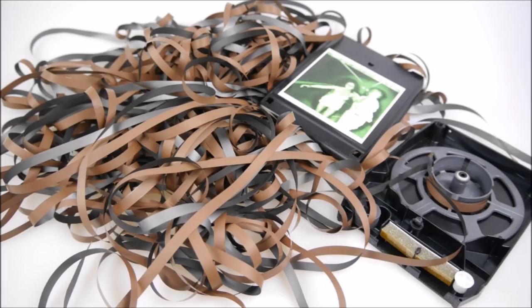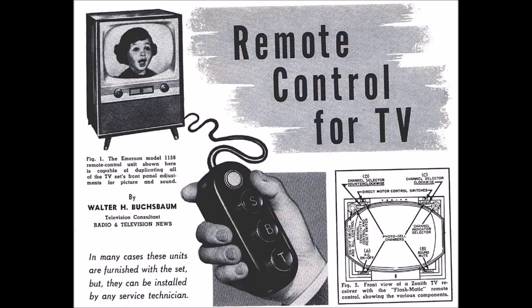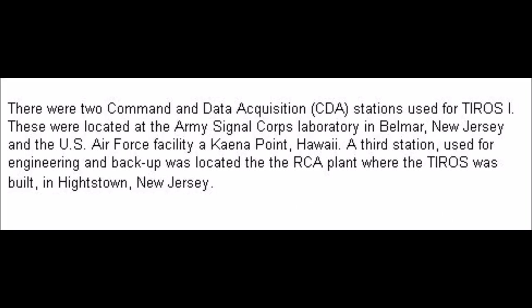Each camera was also connected to a clock-controlled tape recorder to record images when the satellite was beyond the range of a ground station. Each recorder contained 400 feet of tape and could record up to 32 pictures for playback the next time the satellite was in range. So this thing had 400 feet of tape — in the vacuum of space, operated via remote control, 400 miles away. There were two command and data acquisition stations used for the TIROS-1, located at the Army Signal Corps Laboratory in Belmore, New Jersey and the Air Force facility at Cayenne Point, Hawaii.